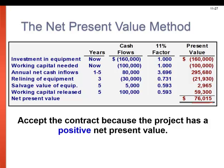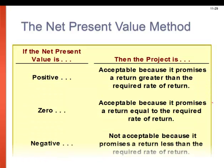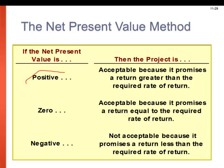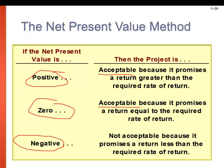We're actually going to accept the contract because the project has a positive net present value. In summary: if the net present value is positive, we're going to accept it. If it's zero, we're probably still going to accept it because it promises a return equal to the required rate of return. And if it's negative, we're not going to accept it — that means we're still in the hole for the original investment.